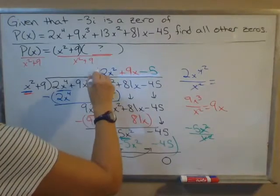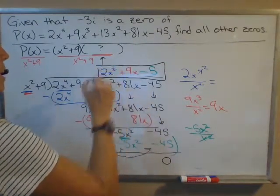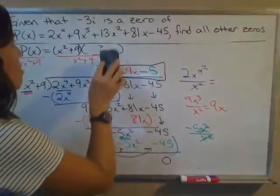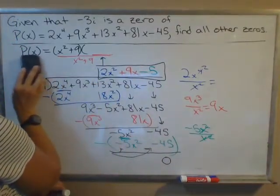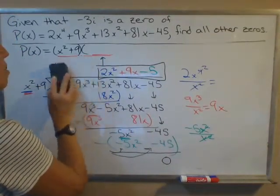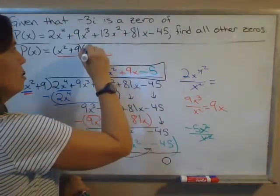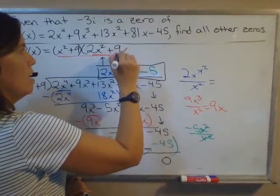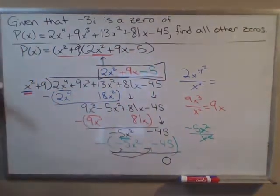The quotient, which is our missing factor right here, is 2x^2 + 9x - 5. So I can fill that in now. We figured that out by dividing both sides by x^2 + 9. So the missing factor is 2x^2 + 9x - 5.